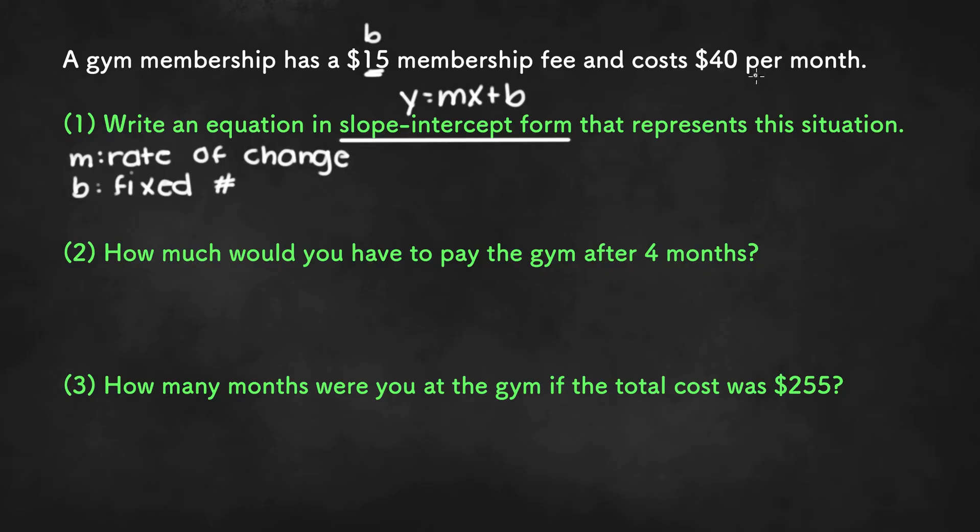Now m is a rate of change, so since we have per, we can assume that this $40 is m. So once we plug that into the equation, we get y equals 40x plus 15. And that'll be the answer to the first part.